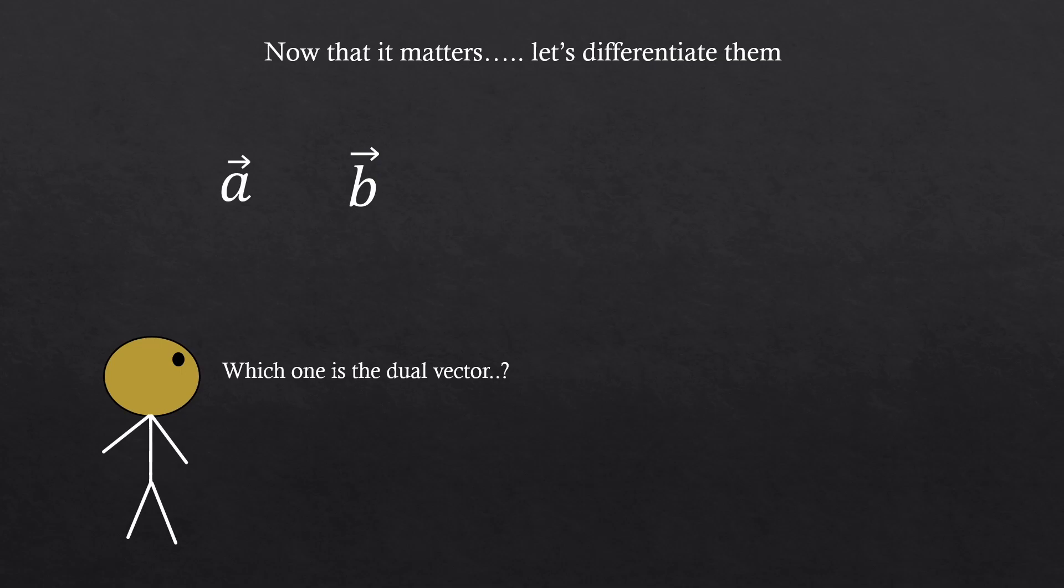In GR, it does matter. Dual vectors should be the background object, right? So let's differentiate them. Let's change the way of writing.